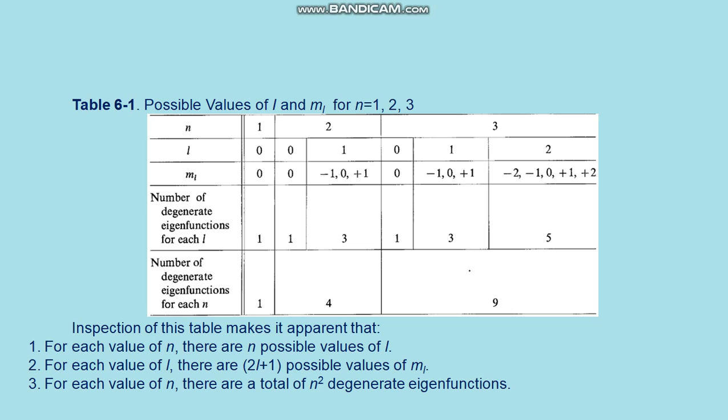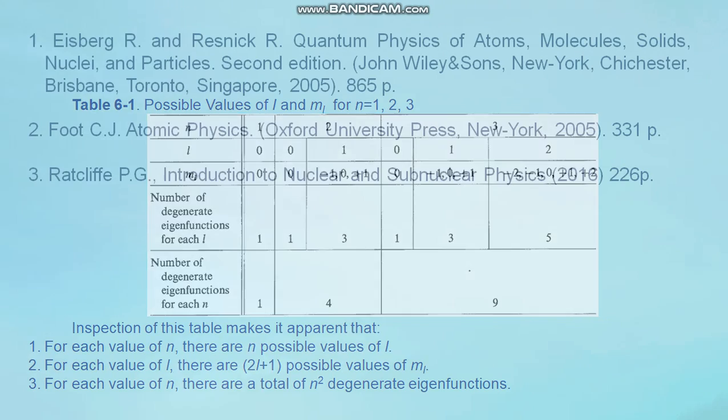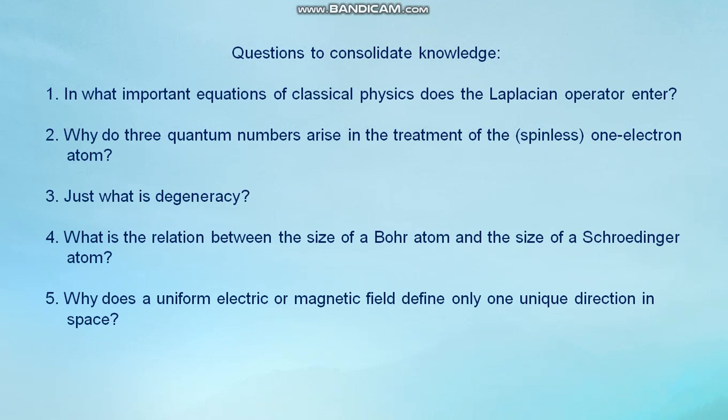For the next slide: questions for consolidation of knowledge. First question: into which important equations of classical physics does the Laplacian operator enter? Second question: why do three quantum numbers arise in the treatment of the spinless one-electron atom? Third question: just what is degeneracy? Fourth: what is the relation between the size of the Bohr atom and the size of the Schrödinger atom? Fifth: why does a uniform electric or magnetic field define only one unique direction in space? Thank you for your attention.